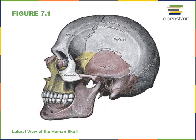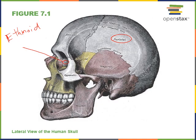Here we see a lateral view of the skull. Let's pick out the cranial bones starting with P for parietal. The parietal bone forms the superior and lateral walls of the cranium — the word parietal means wall. There are two parietal bones, left and right. Then there's the ethmoid; we can see just a little bit of it here, found in the superior nasal cavity and the anterior floor of the cranium.